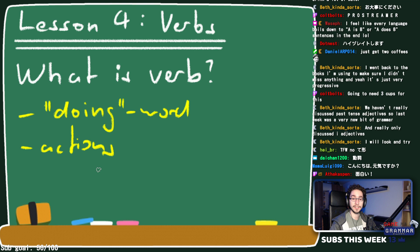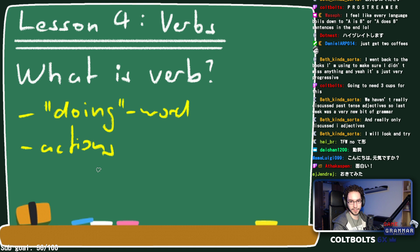I-adjectives can fill the predicate role in a sentence, so we don't need a verb to make it a complete sentence. In almost any other case you'd need a copula or a verb to complete the sentence — except for i-adjectives, which come with that function built in.